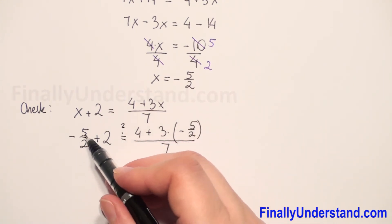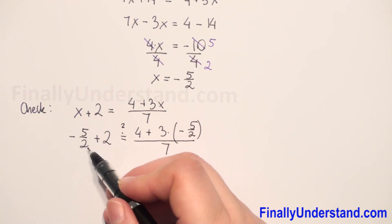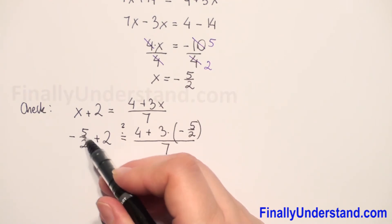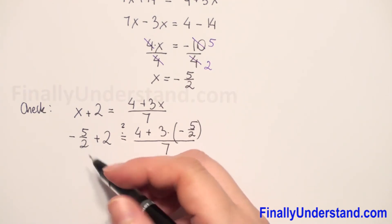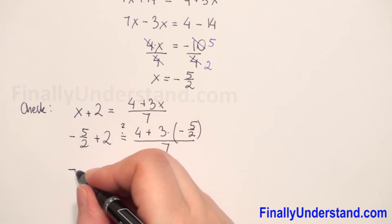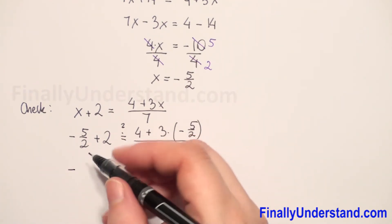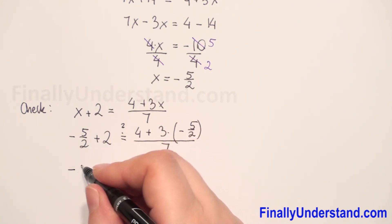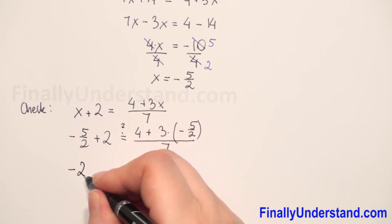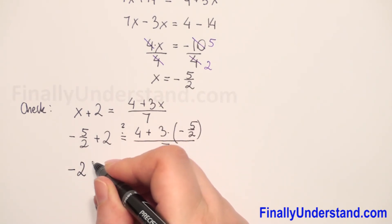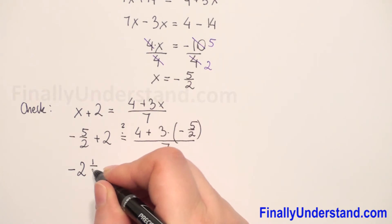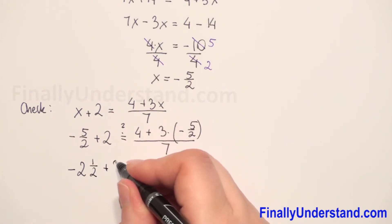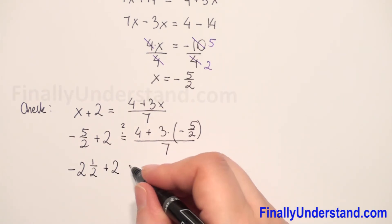On the left side we have negative 5 over 2. This is an improper fraction, so we can change it to a mixed number — negative sign we copy, and 5 divided by 2 gives us 2 and 1 half. So negative 2 and 1 half plus 2 gives us negative 1 half.